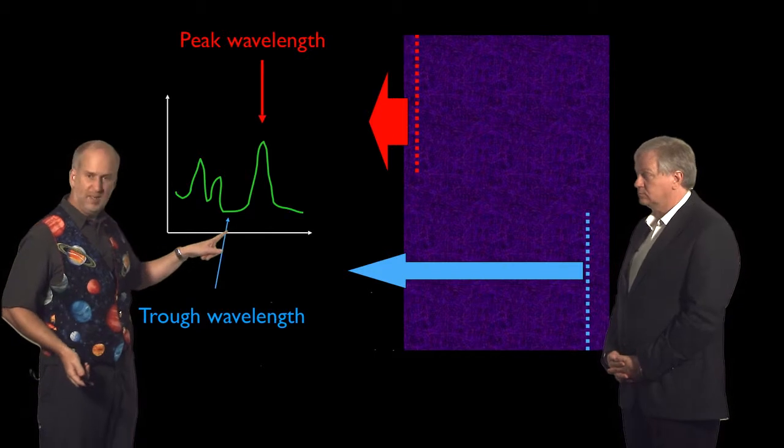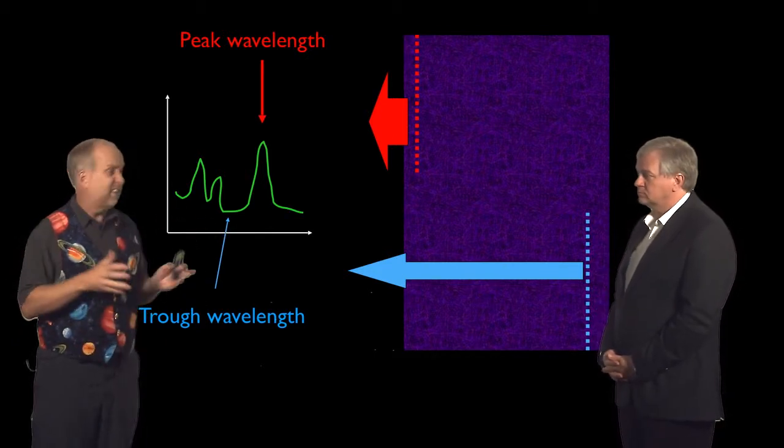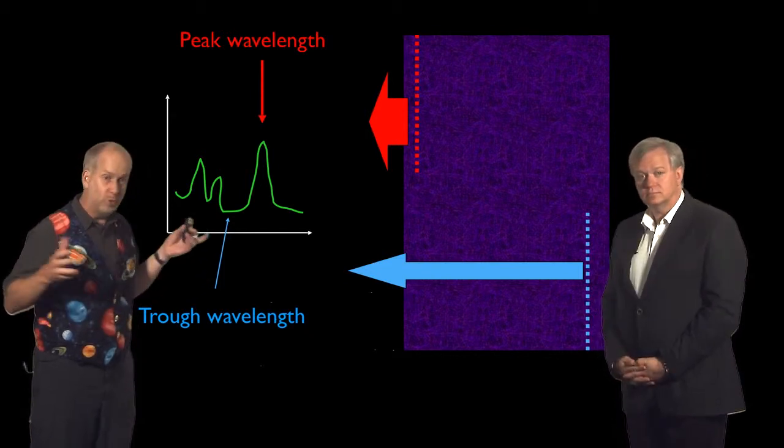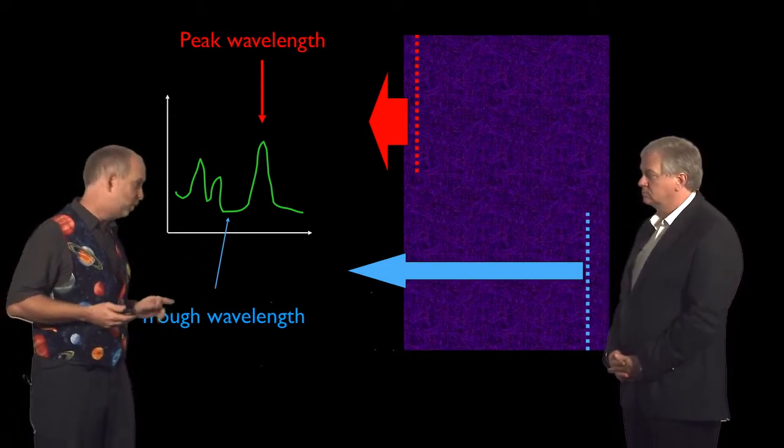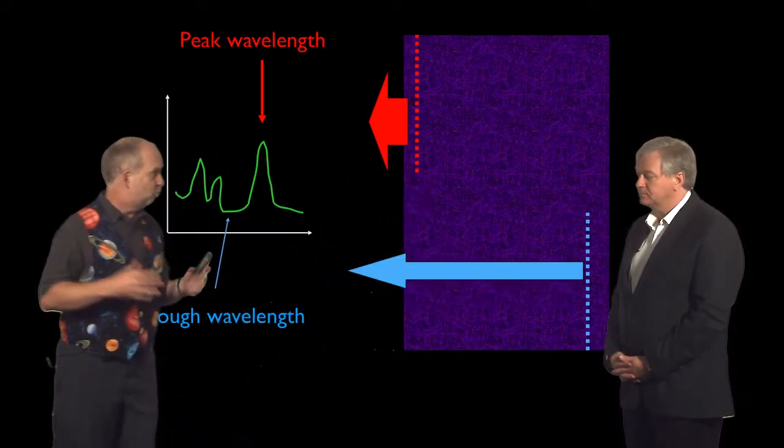But let's say you look at different wavelengths like this one down here where there aren't any particular transitions that match it. In that case, the gas doesn't emit very much, only very little per unit volume. But on the other hand, it's not going to absorb very much. So you get a very large region of the gas cloud which is transparent.